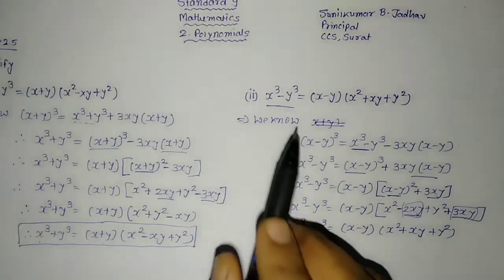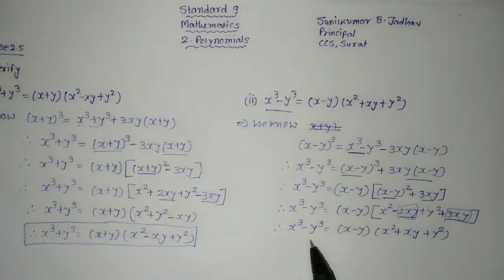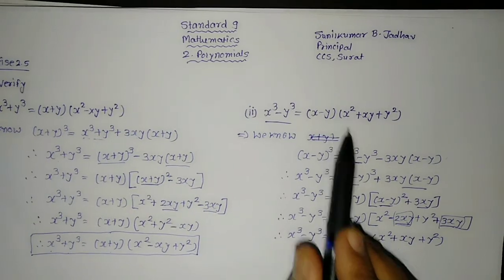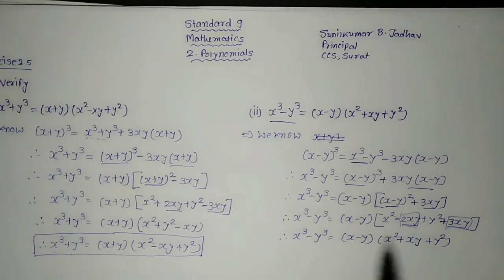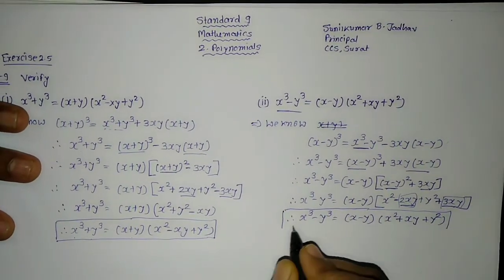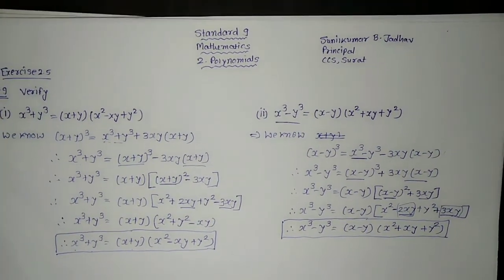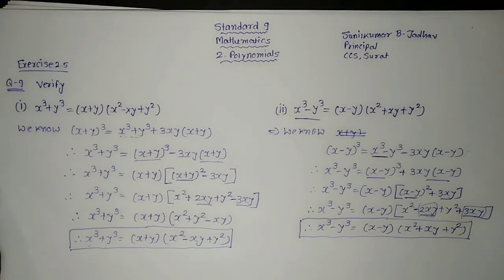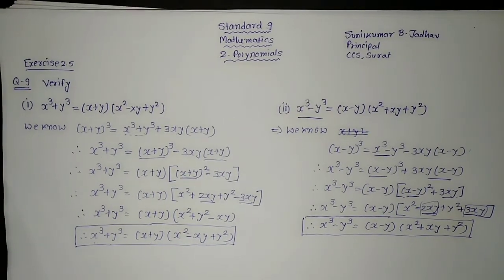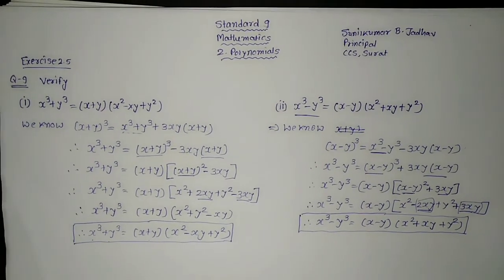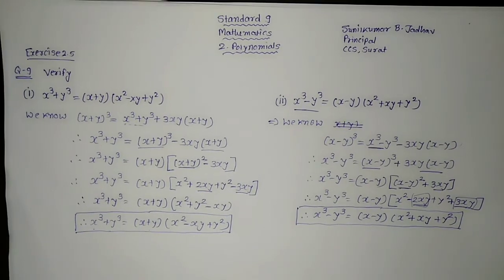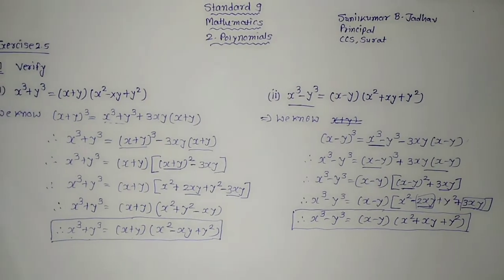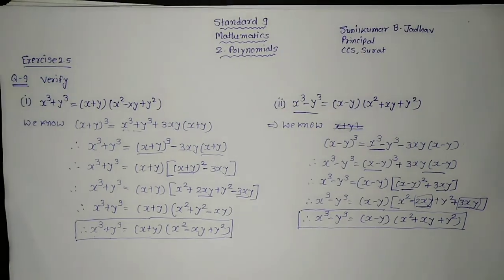So x cube minus y cube is equal to x minus y into bracket x square plus xy plus y square. We have proved both: x cube plus y cube equals x plus y into bracket x square minus xy plus y square, and x cube minus y cube equals x minus y into bracket x square plus xy plus y square. We have verified both here. This is Question Number 9 of Exercise 2.5. I hope you have understood. In the next video we will see furthermore. If you like this video, click on the like button and share with your friends. Thank you so much.